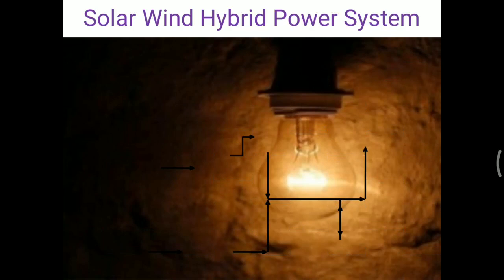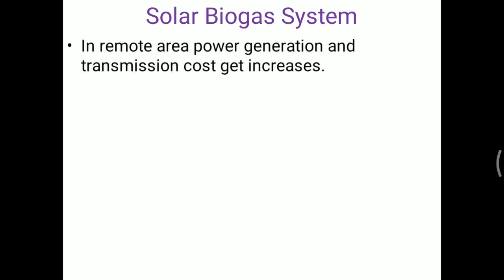The advantages of the hybrid system are: first, it ensures continuous power supply. Second, the system can be used at remote locations where transmission lines are not available. Third, it reduces the size of the large energy storage battery needed individually for a solar power system and a wind power system.